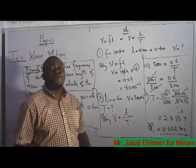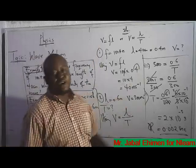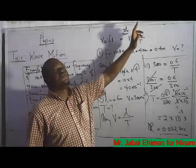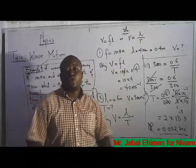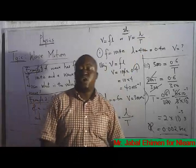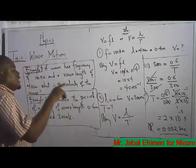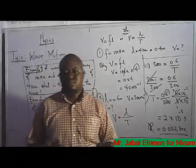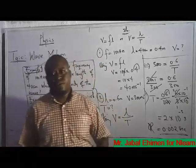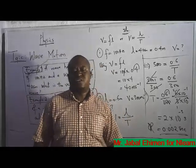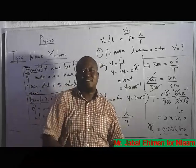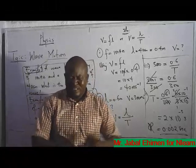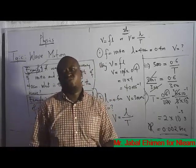That is the value of the period in seconds. You can use V equals F lambda, or V equals lambda over T for the wave equation. Now let's talk about something in wave theory — specifically the properties that waves are known for.